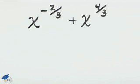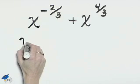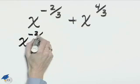Factor x to the negative 2 thirds power plus x to the 4 thirds power. Let's rewrite this so that we have a greatest common factor of x to the negative 2 thirds for both of these terms.